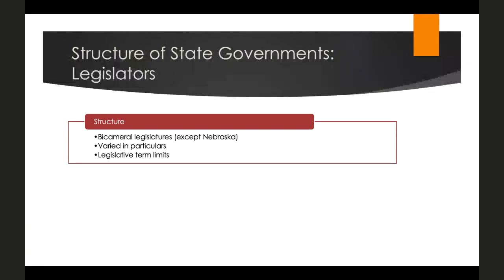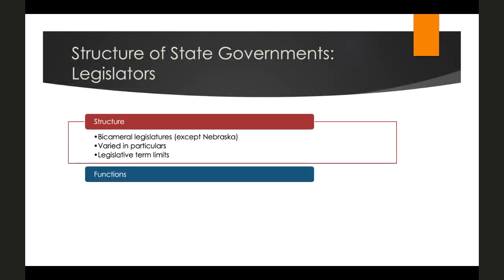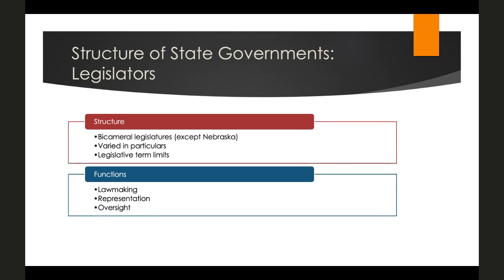Looking at the functions of the legislature — much like Congress, the legislature has three main functions: law making, representation, and oversight. Unlike Congress, state legislatures have to work much more closely with the governor to pass legislation because of the governor's expanded powers. Furthermore, every state except Vermont has a balanced budget amendment or balanced budget requirement in their state constitution, placing severe restrictions on the types of laws that can be passed, since you cannot exceed the revenue coming in through taxes or federal grants.